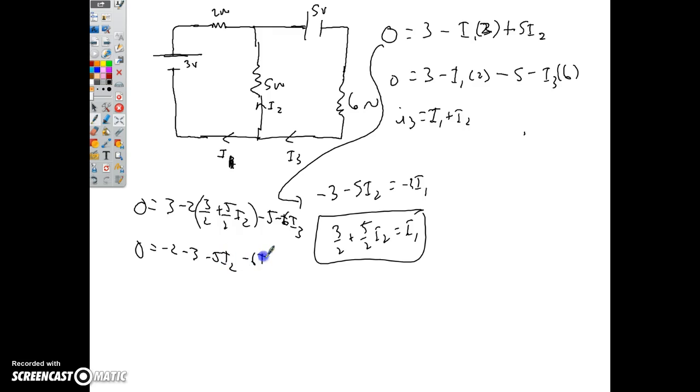Simplifying that I get zero equals negative two minus three minus five I2. I got that taken care of, so minus six I3s. Plug into this equation here, I'm going to get I3 is equal to three halves plus five halves I2 plus I2. So I get I3 is equal to three halves plus seven halves I2.